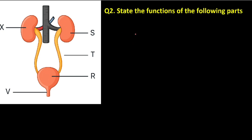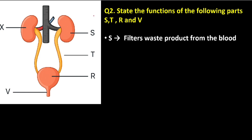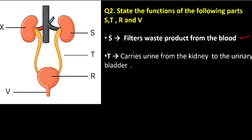Question number two: state the functions of the following parts — S, T, R, and V. S is the kidney, so the function of the kidney is to filter waste products like urea from the blood. What about T? T is connecting the kidney and the bladder, and therefore its function is to carry urine from the kidney to the urinary bladder.